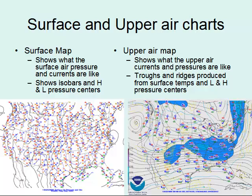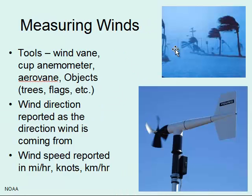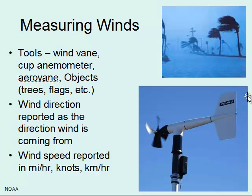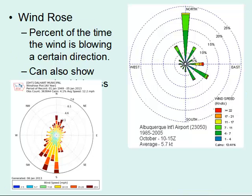These are the maps that can be produced from measuring pressure. You can also measure winds at the surface. We measure them using wind vanes, anemometers, aerovanes, and even objects like trees. Wind direction is usually reported in the direction the wind is coming from, not going to — that's a common confusion. We measure wind speed in miles per hour, knots, or kilometers per hour.